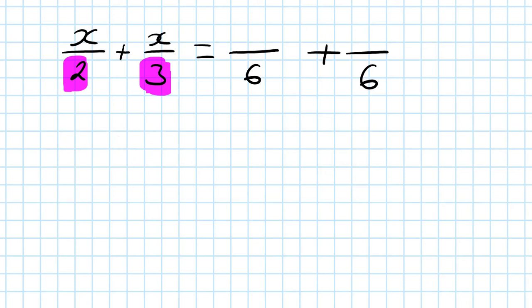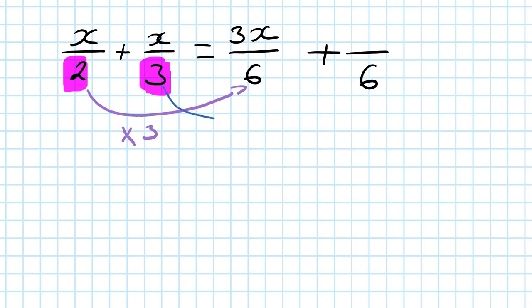Once you have the common denominator, you go from 2 to 6 — that's times 3 — so the top must also be times 3: x times 3 is 3x. Then from 3 to 6 is times 2, so the top must also be times 2: x times 2 is 2x.